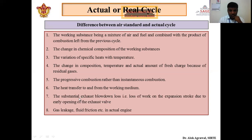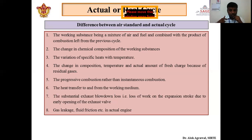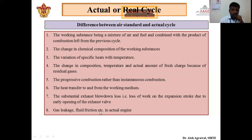Next is the substantial exhaust blowdown loss — that is, the loss of work on the expansion stroke due to the early opening of the exhaust valve. From the valve timing diagram we have seen that the exhaust valve opens before the power stroke ends, causing a loss of work. This loss is accounted for in the actual cycle but neglected in the ideal cycle. Additionally, in an actual engine there are gas leakages, fluid friction, and frictional power losses, all of which are ignored in the ideal cycle.